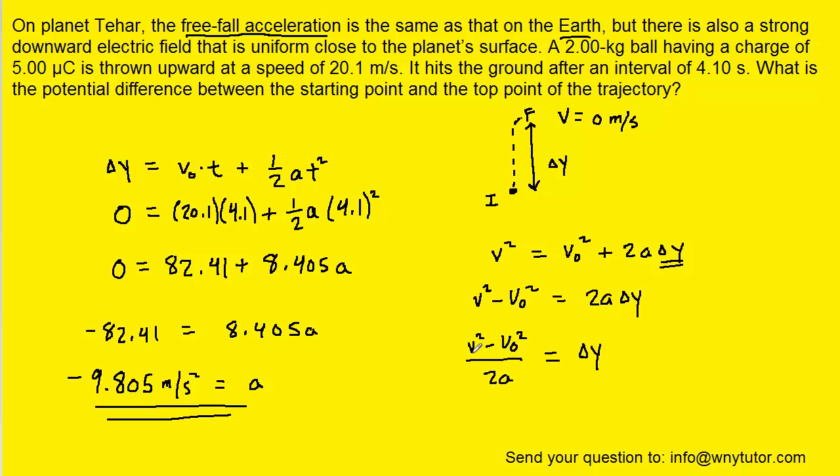We'll plug in zero for the final velocity. The initial velocity was 20.1 and then the acceleration we just determined. And when we compute that, we get approximately 20.6 meters. So that will represent the maximum height that the ball reaches in its flight.